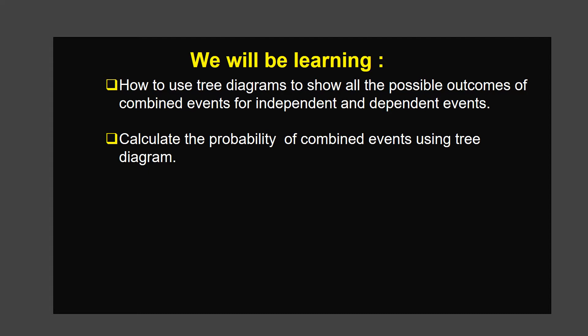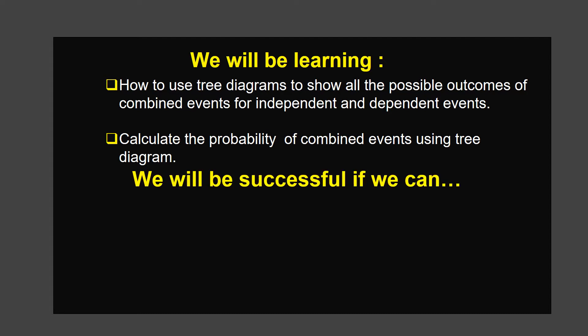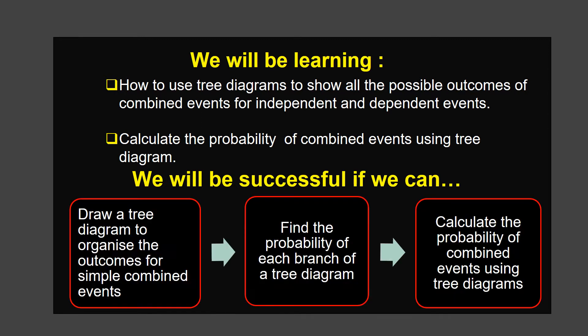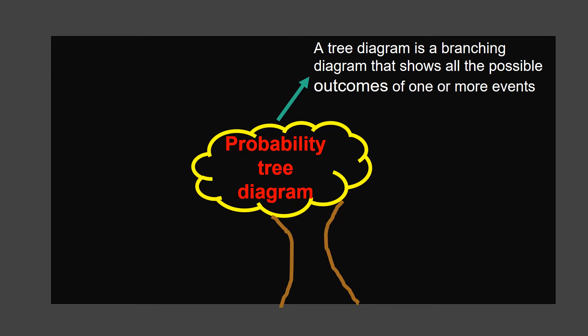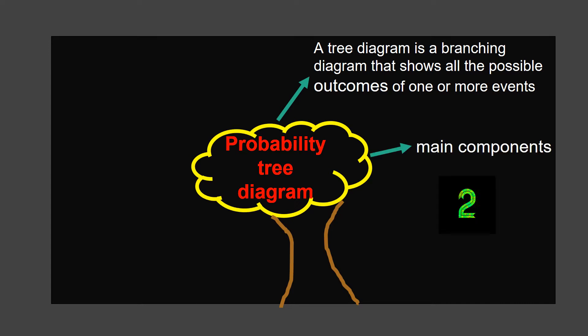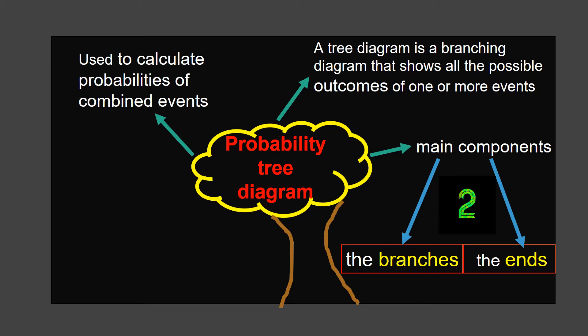We will calculate the probability of combined events using tree diagrams. We will be successful if we can draw a tree diagram to organize the outcomes for simple combined events, find the probability of each branch of a tree diagram, and calculate the probability of combined events using tree diagrams. A tree diagram is a branching diagram that shows all the possible outcomes of one or more events. Two main components are the branches and the ends, used to calculate probabilities of combined events. Tree diagrams are useful when there are more than two events.